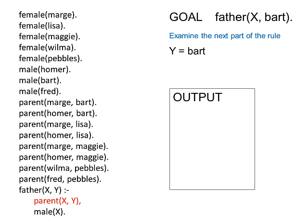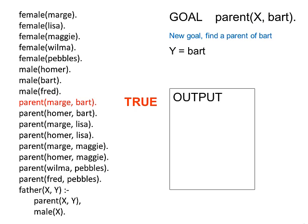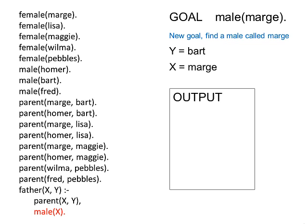Prolog then examines the next part of the rule. Because Y is Bart, Prolog is now looking for a parent of Bart. This is the new goal, and it starts searching again from the top for a parent of Bart. Prolog is successful, it finds Marge. Prolog can now instantiate the variable X to Marge. Then it examines the next part of the rule, and because X is Marge, Prolog is now looking for a male called Marge. Prolog is, of course, unsuccessful.